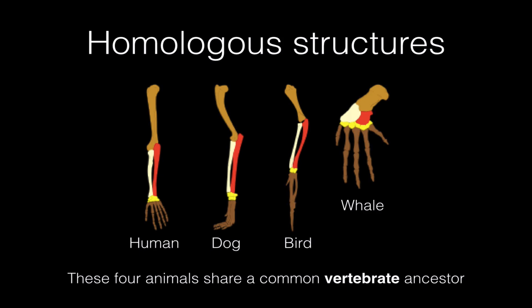In general, homologous structures are structures that have the same parts, the same bones, for example, but are frequently used for different purposes. So if you compare here the forelimbs of humans, dogs, birds, and whales, you can see that the bones match up. But over evolutionary time, they have evolved or adapted for different purposes. So we can say that humans, dogs, birds, and whales all share a common vertebrate ancestor.